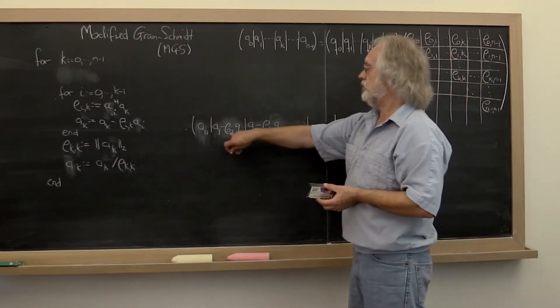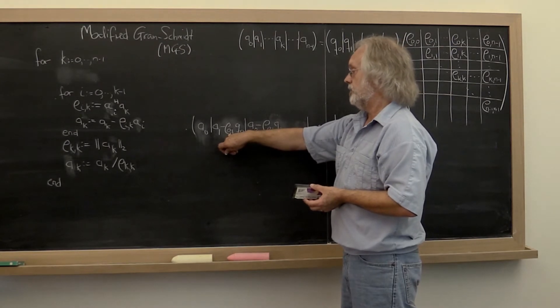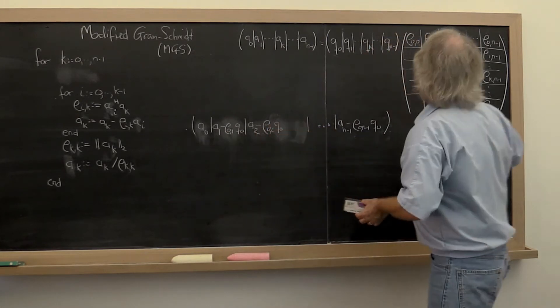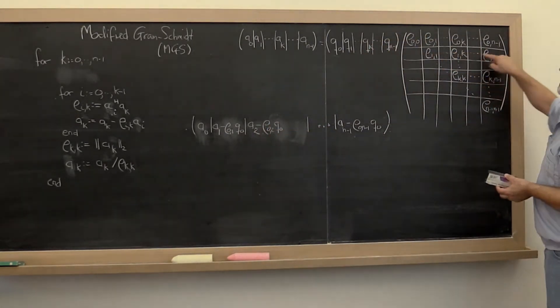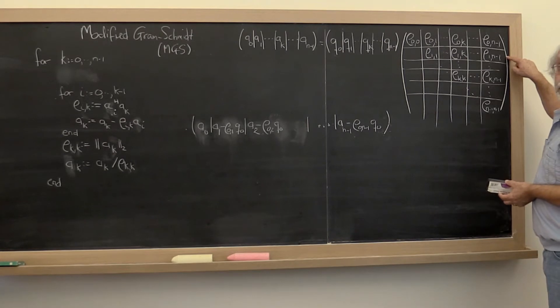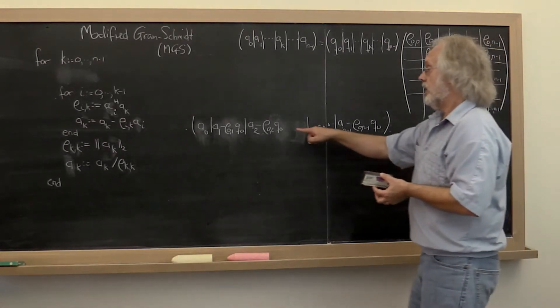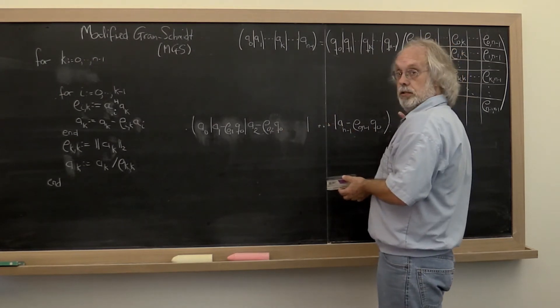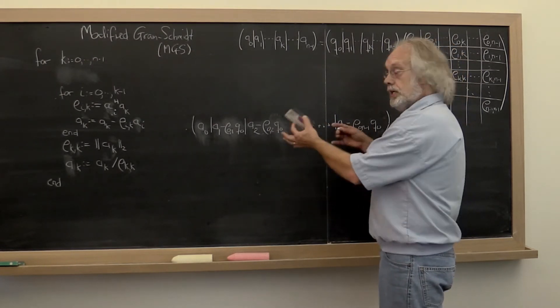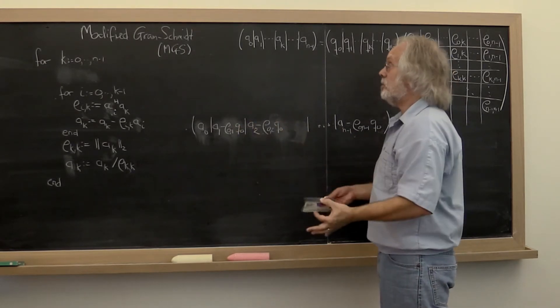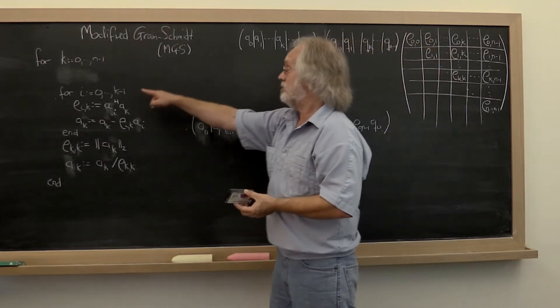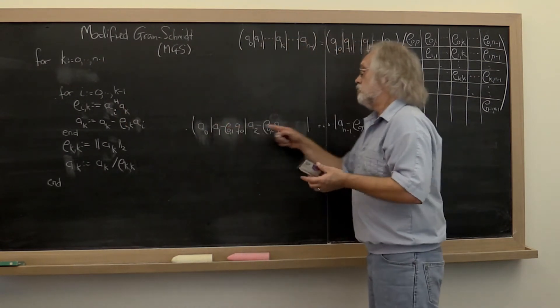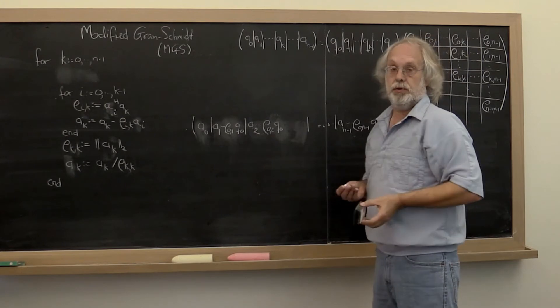And then what we can do is compute the length of this vector, compute Q, and then compute all of these entries in this row of R, and then subtract that component not just off the next column, but off of all of them. And you can see that actually performs the exact same computations as the modified Gram-Schmidt algorithm. It just rearranges the order in which the computations happen.